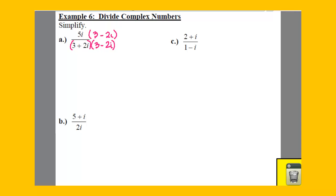So when you distribute on the top, you're going to take this 5i times a 3, which will give you a 15i. Then you've got to take 5i times a negative 2i, so you have a negative 10i squared. Now on the bottom, we get to do our shortcut. Remember, we have a difference of squares on the bottom.